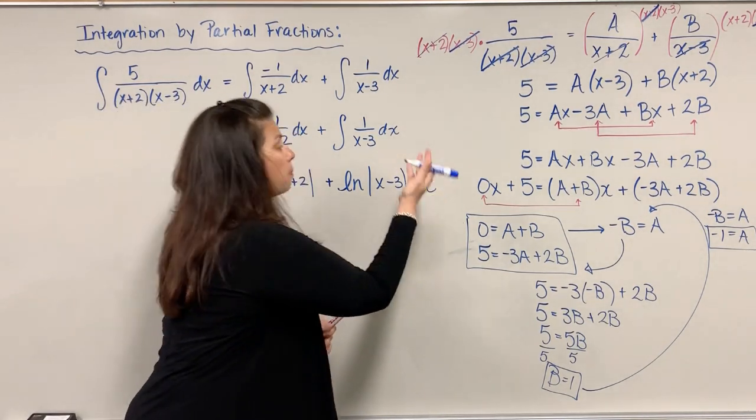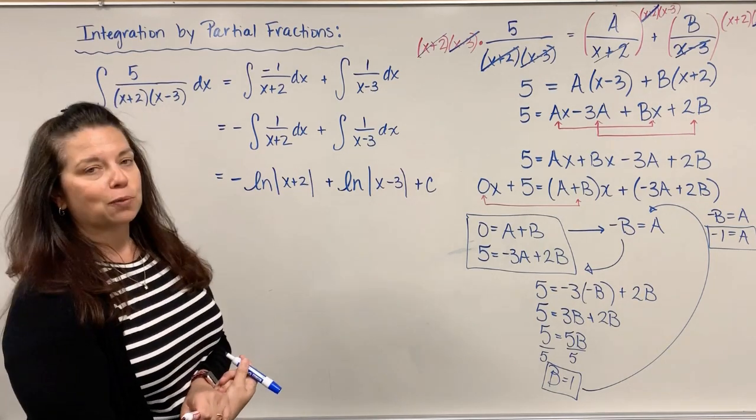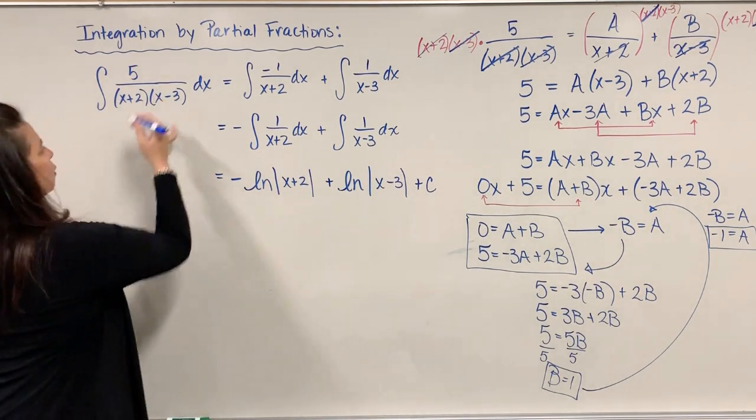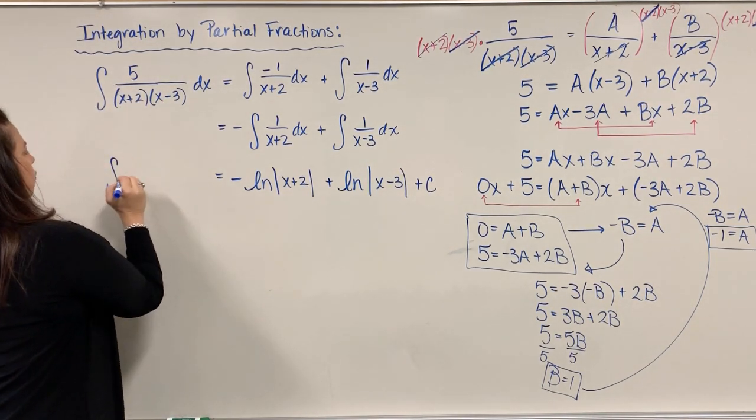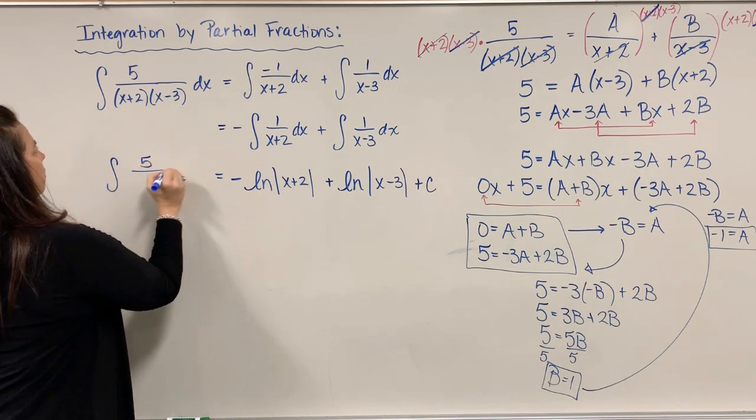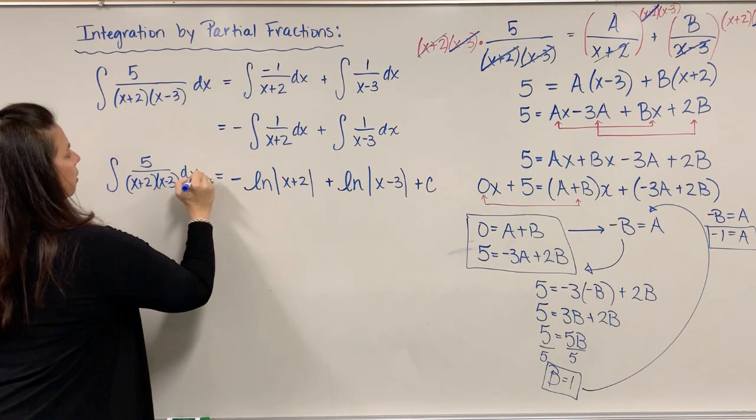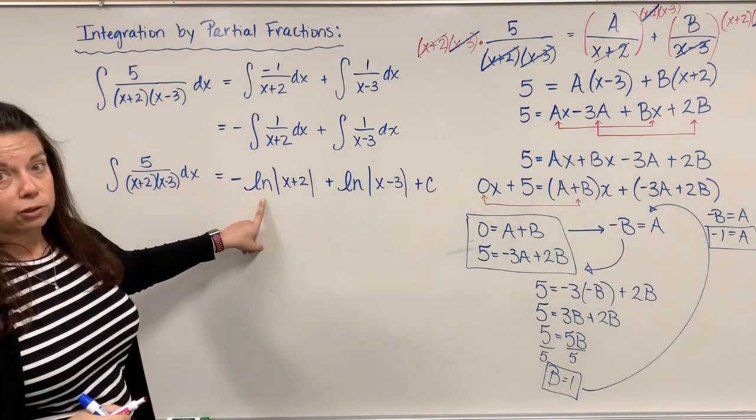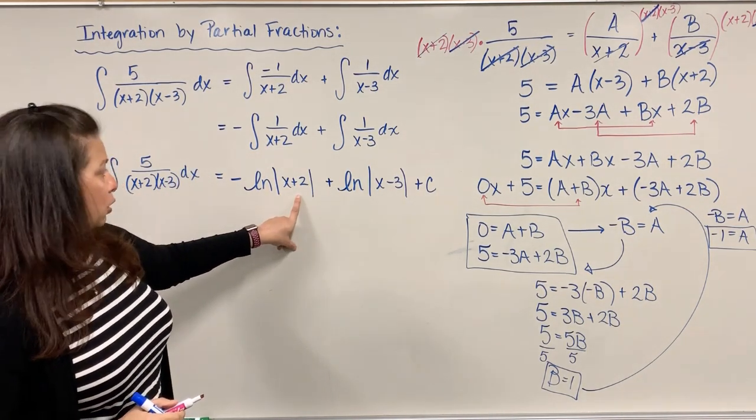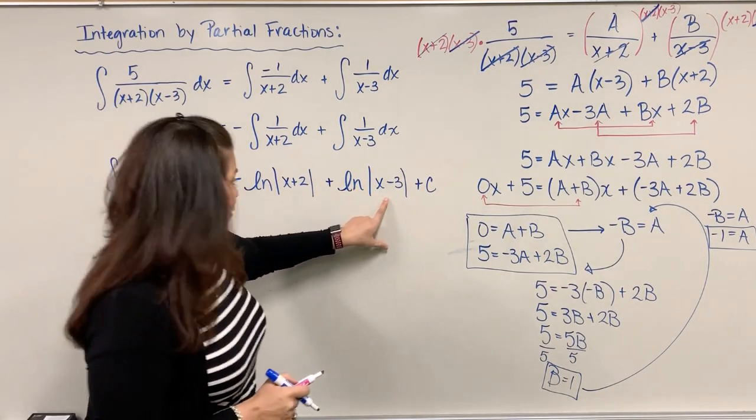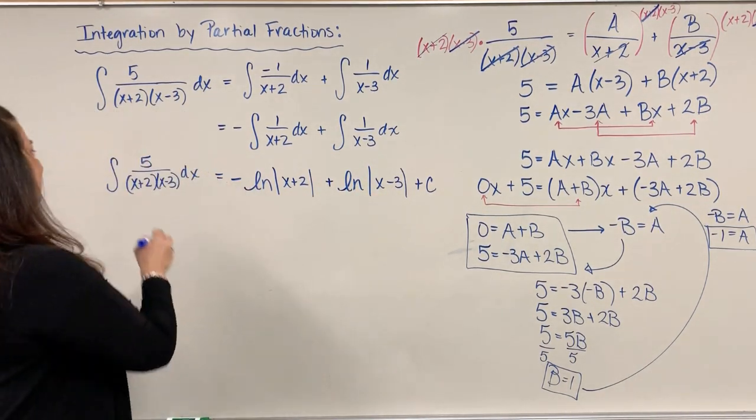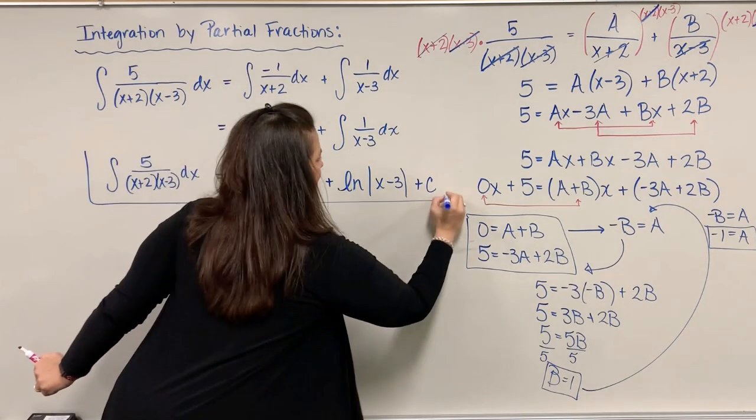So I now have in full the integral of 5 divided by (x+2)(x-3) is equal to -ln|x+2| + ln|x-3| + c. This is the whole thing.